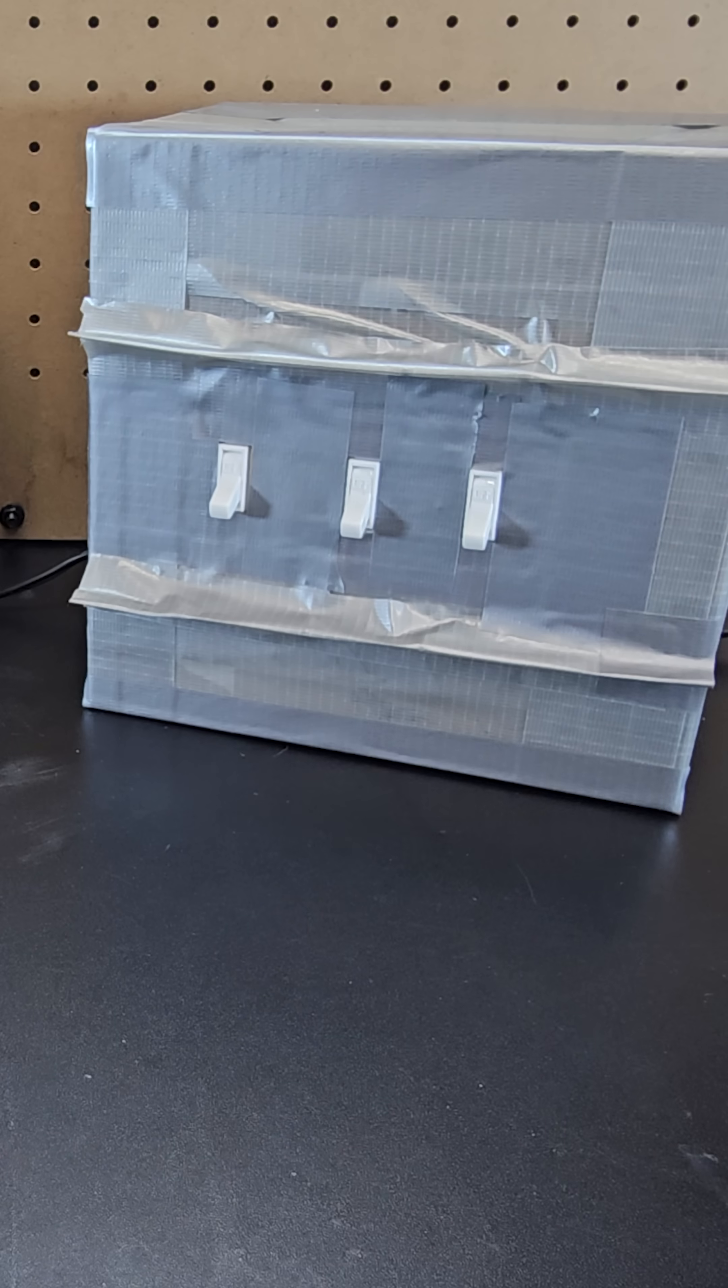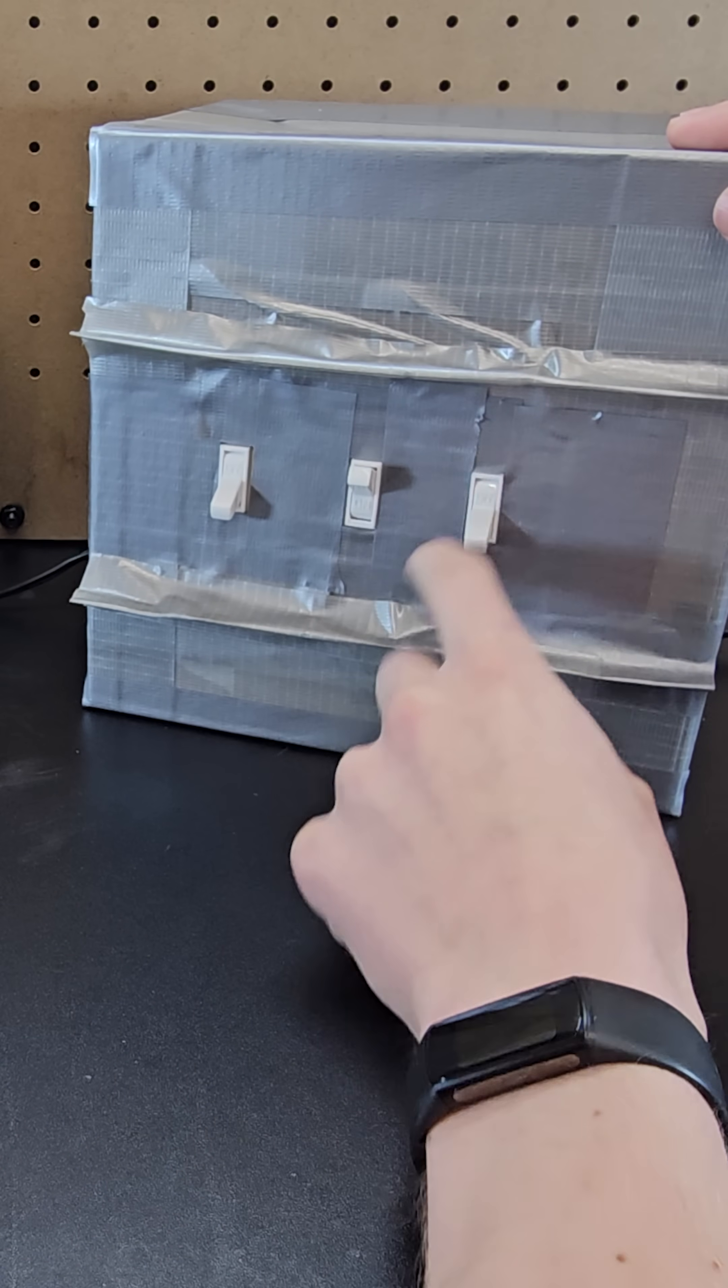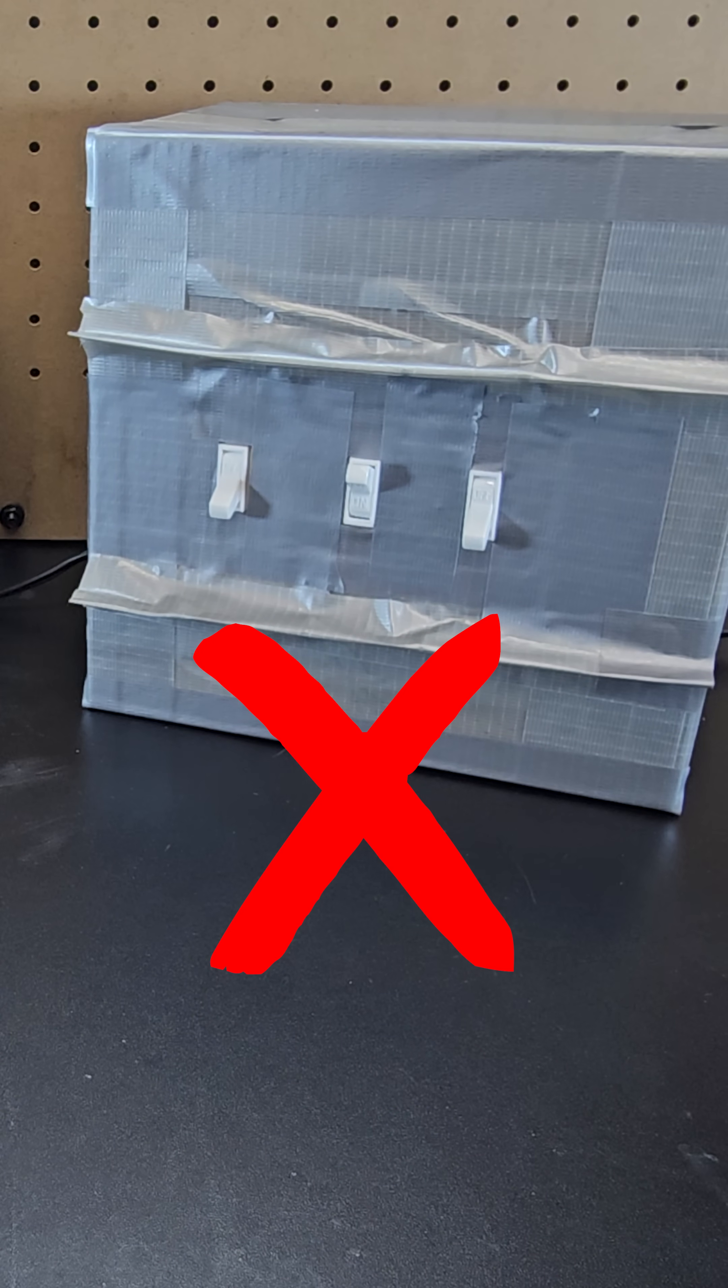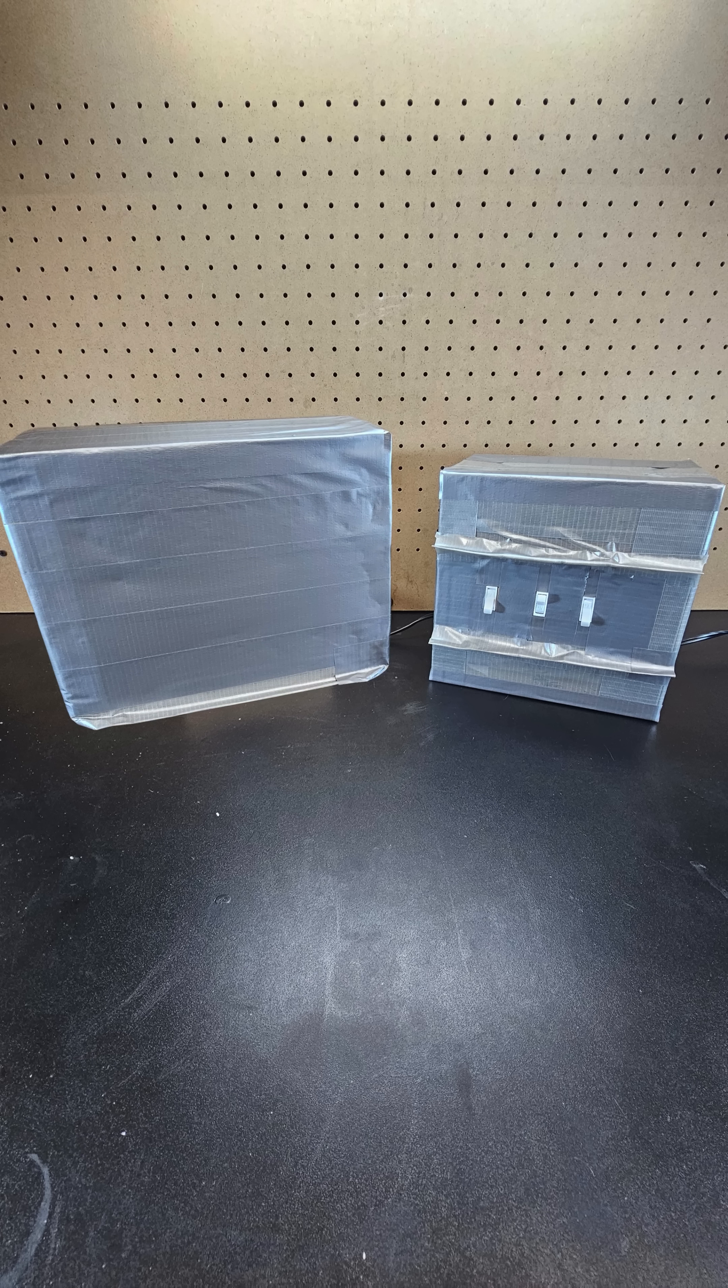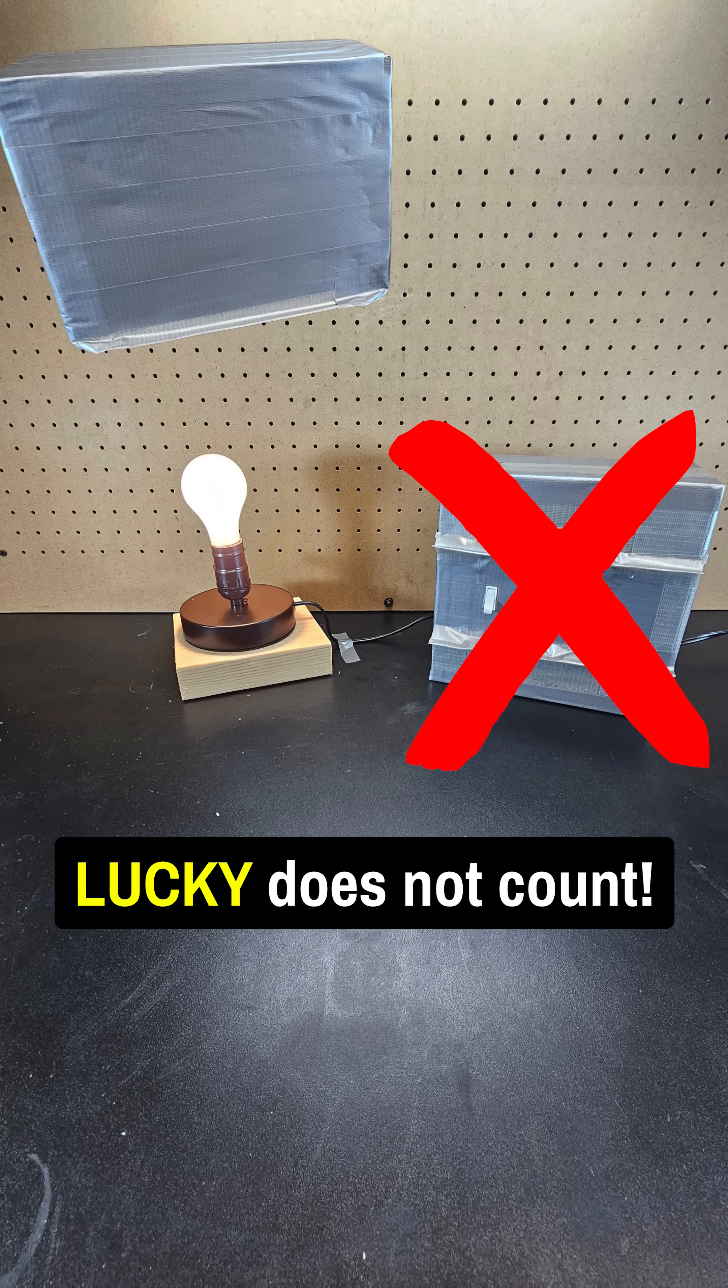In case it isn't clear, the example I showed where I randomly flicked them and left one on wouldn't be a solution because if I go to check on the light bulb and it's off, then I wouldn't know which of the other two light switches controls the light. Sure, I could have gotten lucky and it was on, but you need to guarantee that you'll know with just one check.